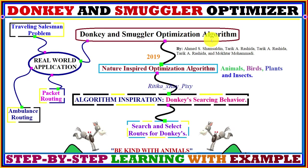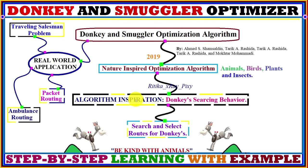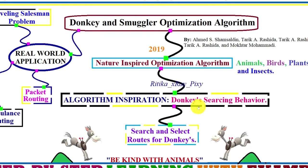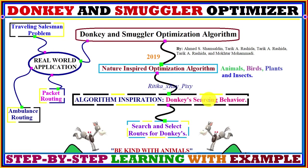The Donkey and Smuggler Optimization Algorithm was introduced in 2019. It is a nature-inspired, population-based metaheuristic optimization algorithm. Nature-inspired optimization algorithms are inspired by animals, birds, plants, or insects. This algorithm is basically inspired by the donkey's behavior in real life.